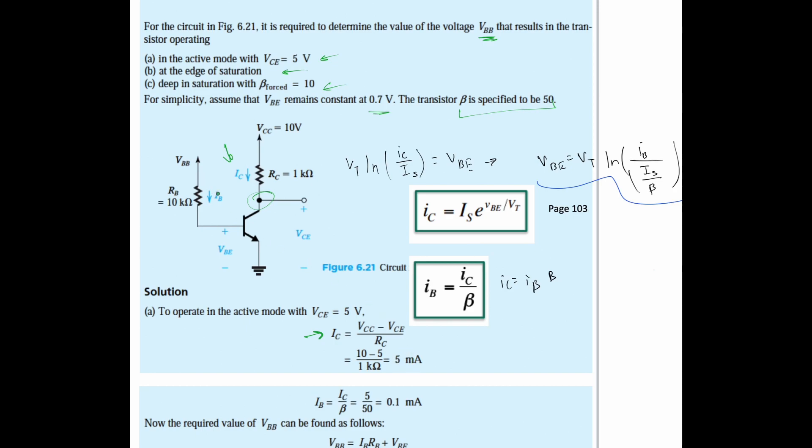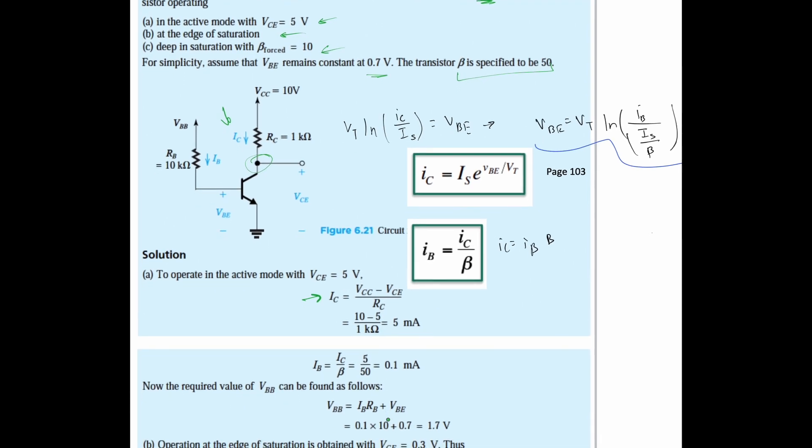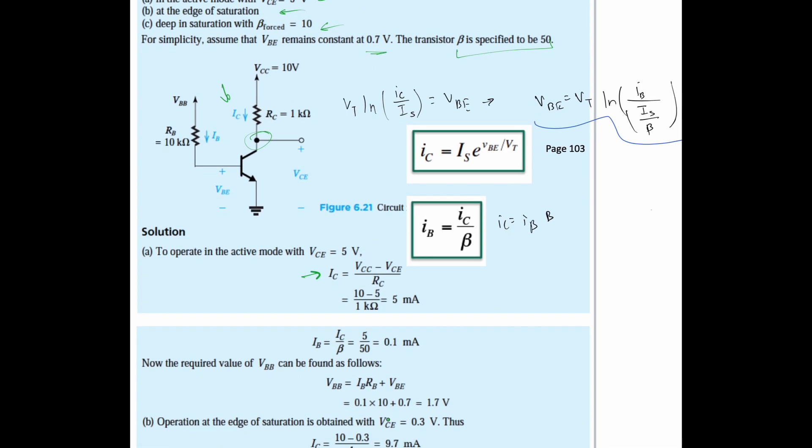Now we're going to do the same thing for our IB. We don't need to take VBB minus VBE over RB because we actually have an equation for IB. IB equals IC over beta. We've just found our IC and we have our beta, so that's going to be 0.1 milliamps.